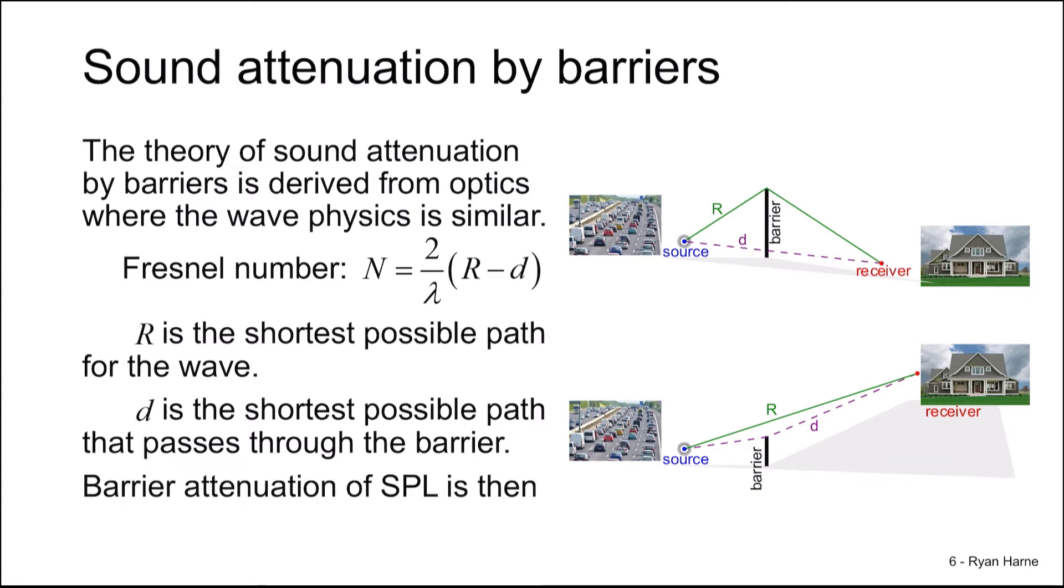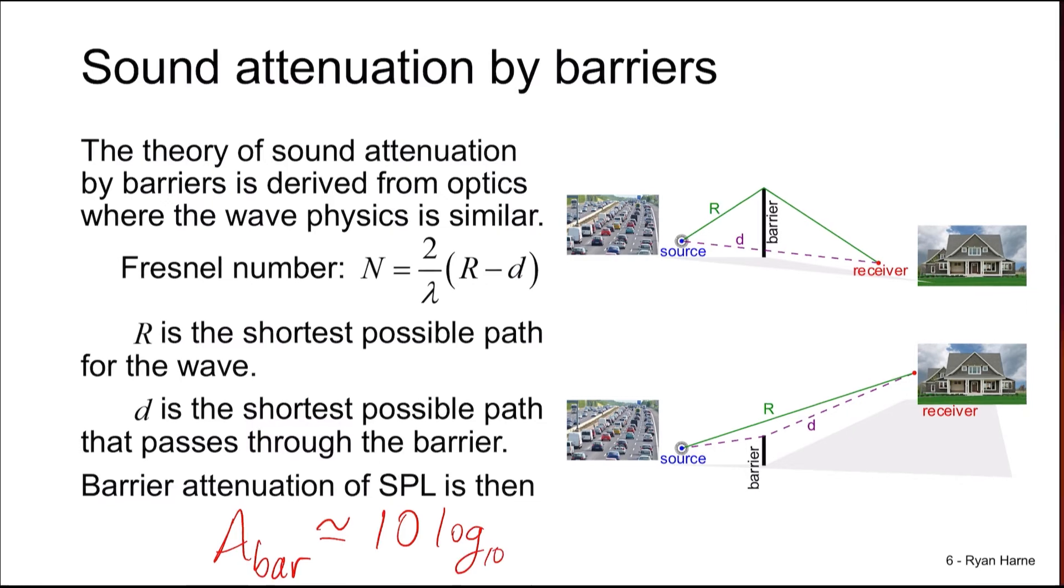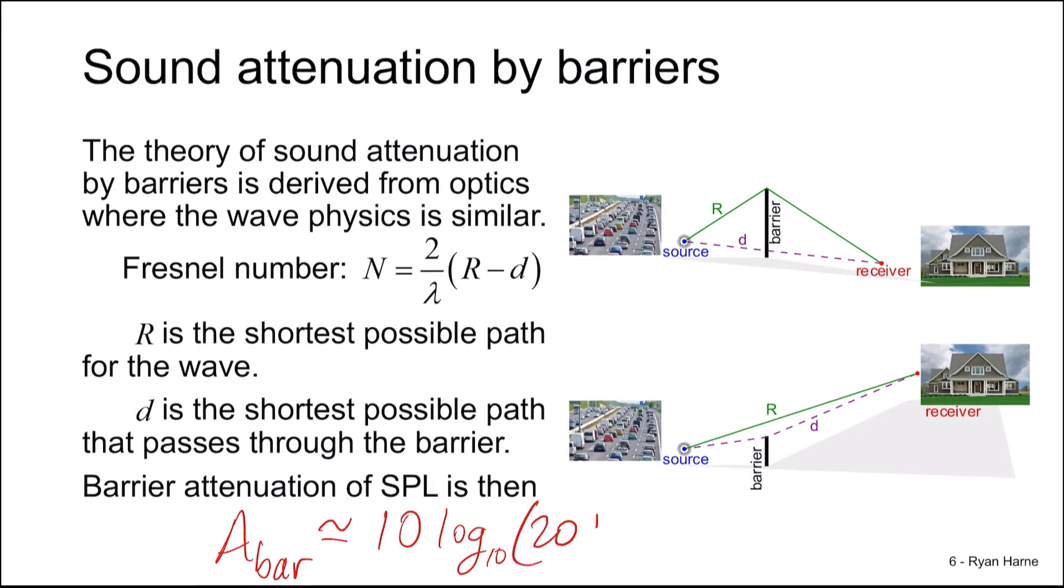The barrier attenuation in SPL is approximately equal to 10 log base 10 of 20 times the Fresnel number, and this is in dB. We note that this equation only holds when R is greater than D.